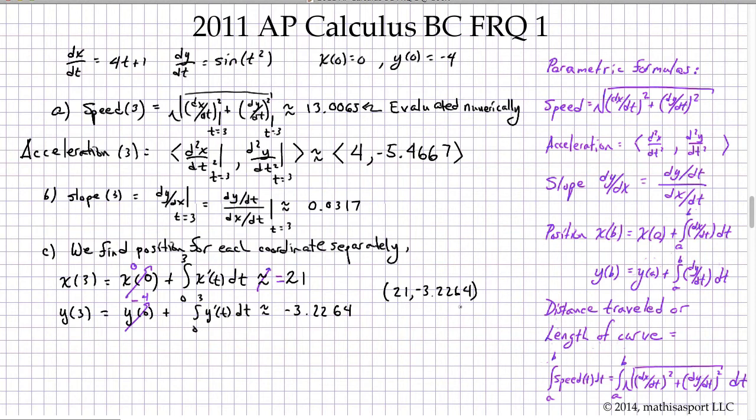Well we're down to the home stretch. And part d wants the total distance traveled from 0 to 3. Now total distance traveled for a parametric function is the same as the length of the curve over that same interval, and it's useful to note that the length of curve calculation for parametrics is just the integral of the speed.